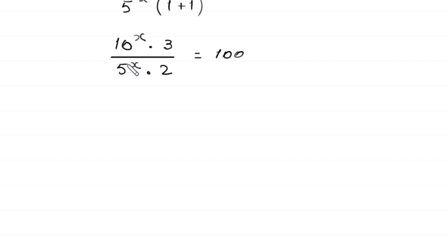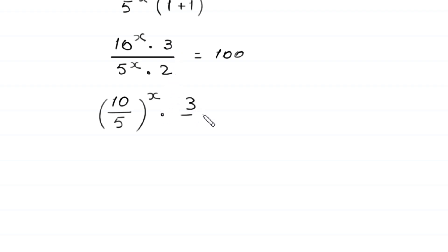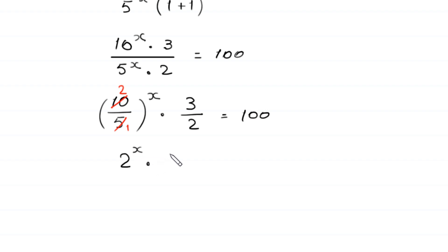Next, 10 to the power x times 3, divided by 5 to the power x times 2, is equal to 100. Now, this 10 to the power x over 5 to the power x can be written as (10 over 5) to the power x, times 3 over 2 equals 100. Since 10 divided by 5 is 2, we are left with 2 to the power x times 3 over 2 is equal to 100.